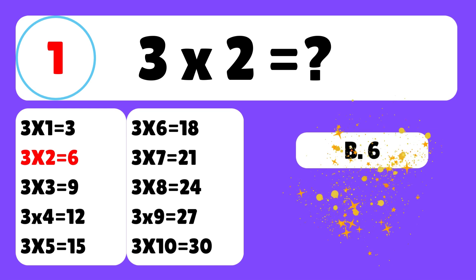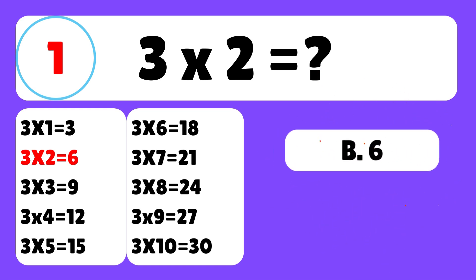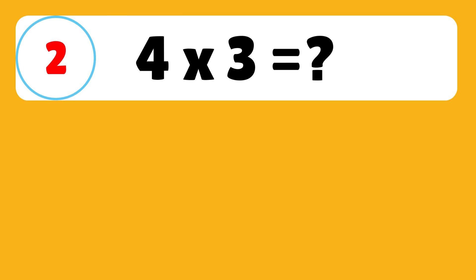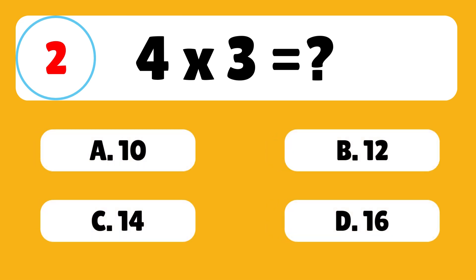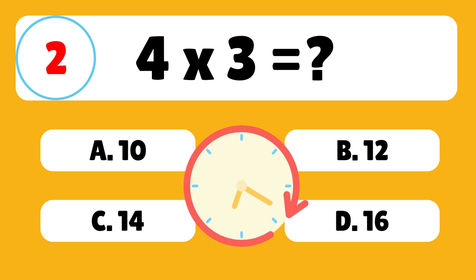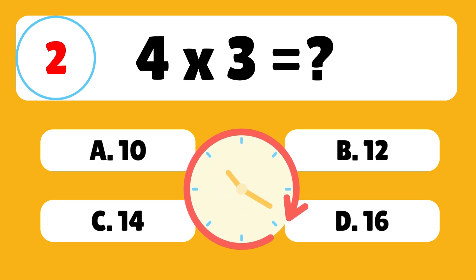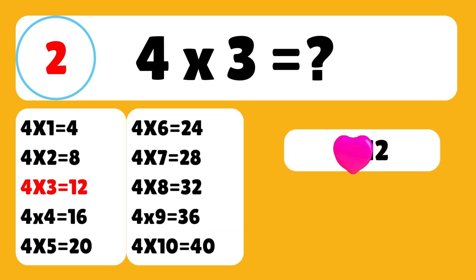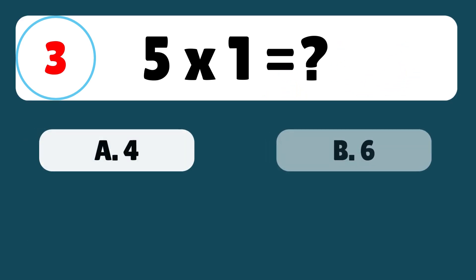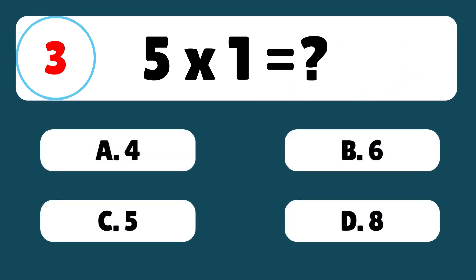The answer is B — three times two is equal to six. Question two: what is four times three? The answer is B — four times three is equal to twelve.